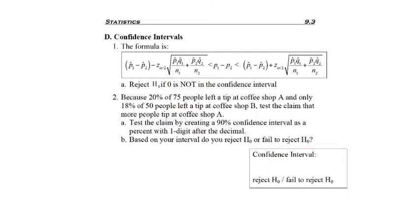When studying two population proportions, we can also find a confidence interval, and the formula is given here.